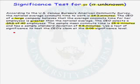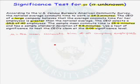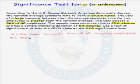The first thing we want to do is identify the parameter of interest. We want to test a claim about mu — the mean commute time of all company employees. Since we are testing a claim about a population mean when we do not know the population standard deviation, we use a one-sample t-test.